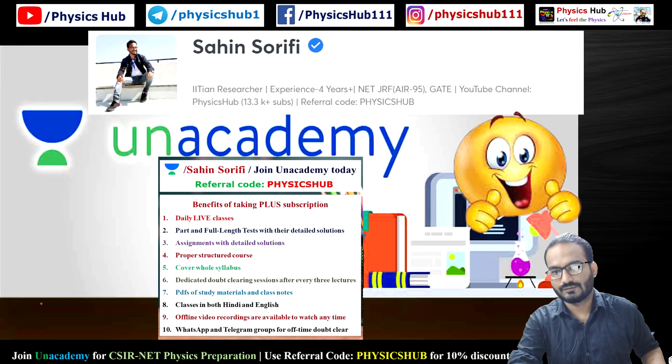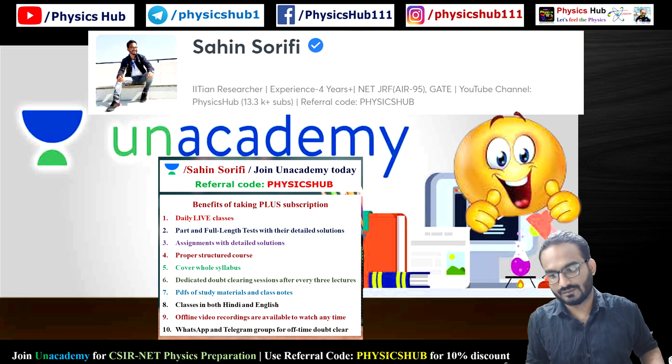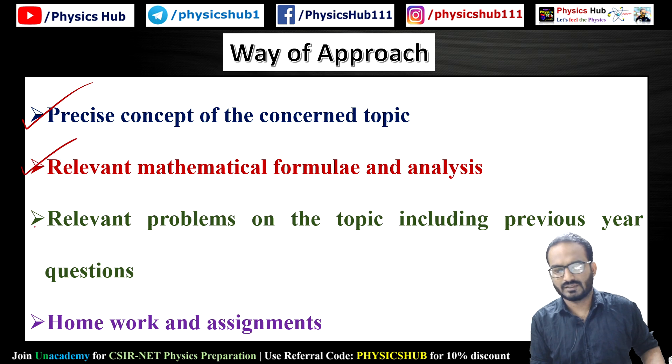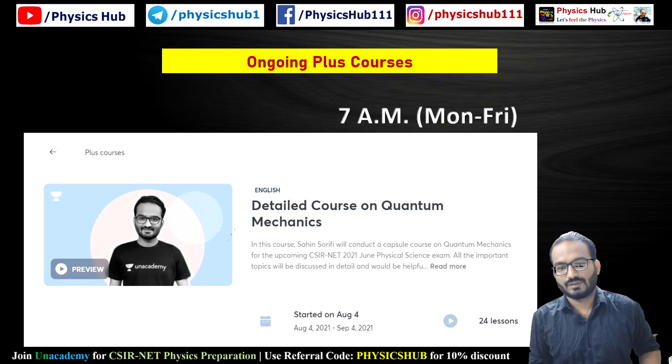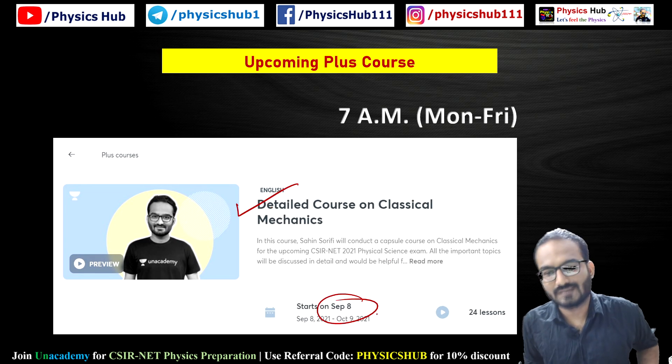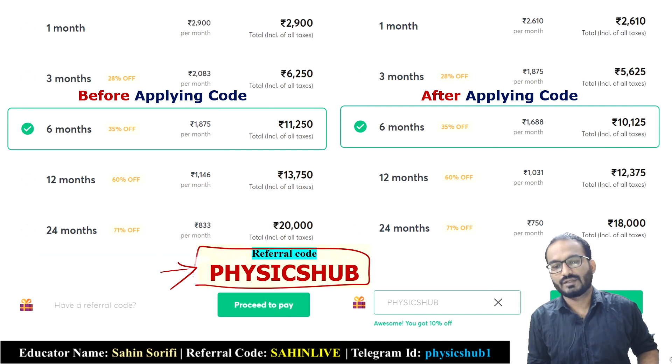Before we end the video, let me tell you: if you think about Unacademy, you can take CSIR NET physical science preparation. You can utilize Physics Hub—and you'll get 10% off with many benefits. You can pause and read my approach. I precisely give you the concept and formula, relevant problems based on the topic, and previous questions are discussed. This course is currently going on—detailed course on quantum mechanics. A course on classical mechanics is coming in September. You can get the link in the description. These fee structures are available; if you utilize our referral code 'physicshub,' Unacademy will give you 10% off.